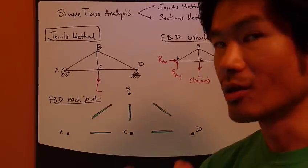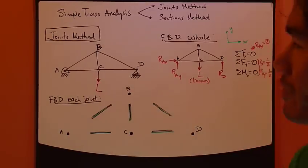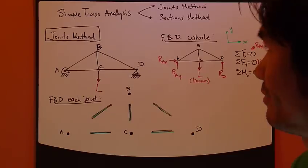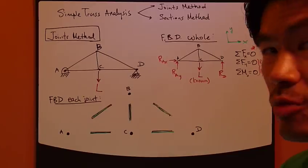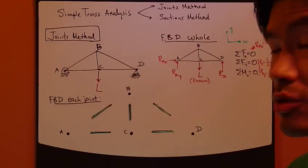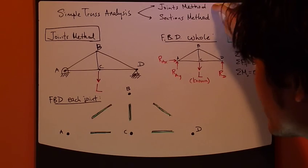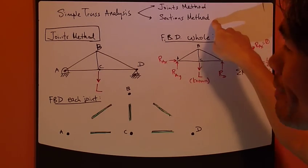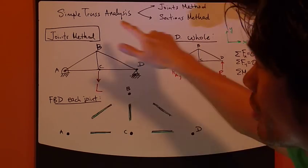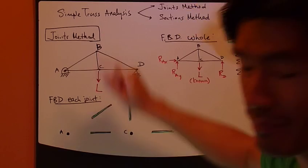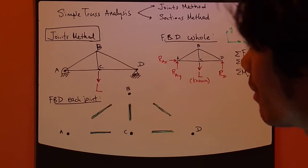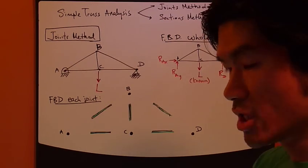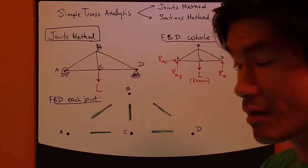Let's start talking about the analysis for simple trusses. I'm going to introduce two methods: the joints method and the sections method. Let's start with the joints method — as the name suggests, we'll be looking at joints.